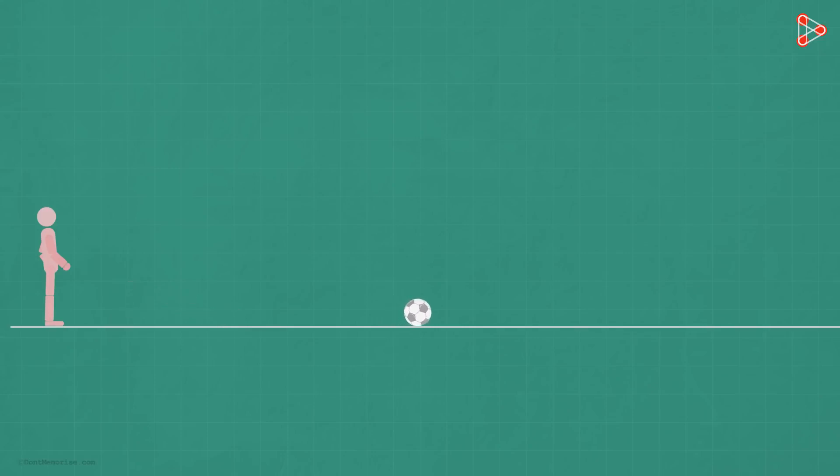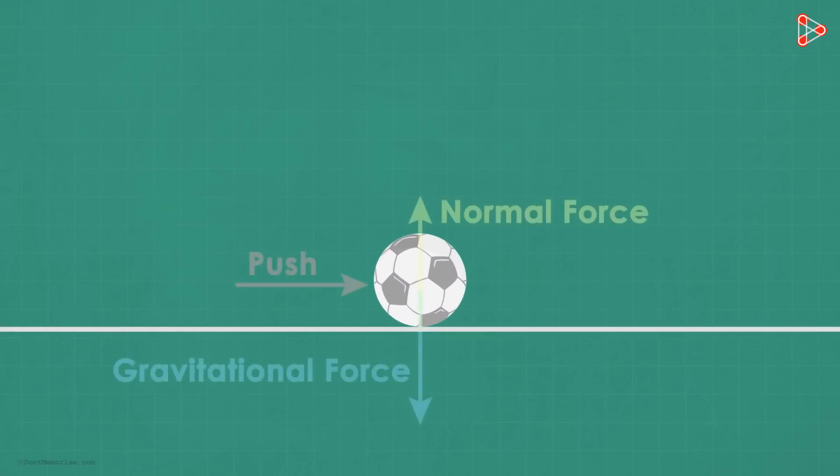But hold on, why did the ball stop moving after covering 15 meters? The ball started moving at a pace and then slowly came to a halt. If there is no force from the other side to stop it, how did it stop? Was there a force which stopped it? Yes, it was friction that stopped the ball. While the force you applied was towards the right, the force of friction was towards the left.